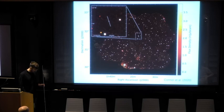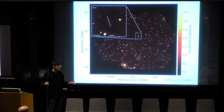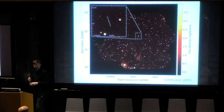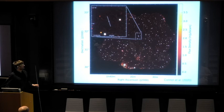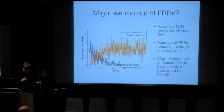One nice thing about carrying out an FRB survey on Apertif is that before we knew much about FRBs, Apertif was an imaging survey, and so we already had a radio image, a continuum image of this field. We didn't see any persistent radio source there.